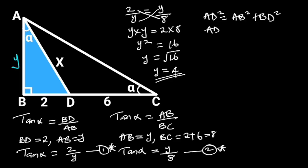AD is equal to X. AB is equal to Y, which is equal to 4. And BD is equal to 2. Substituting these values in the formula will give us X squared is equal to 4 squared plus 2 squared.